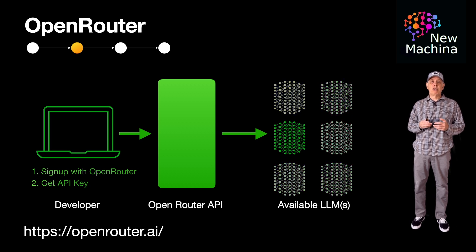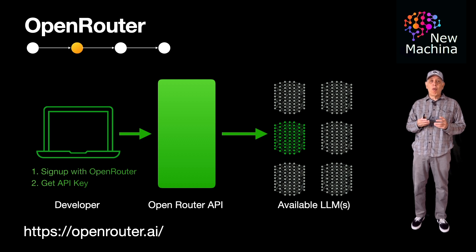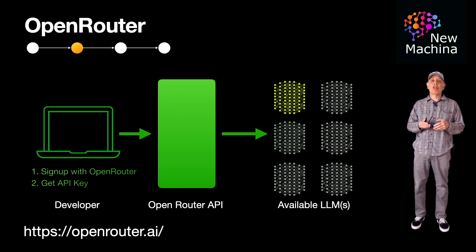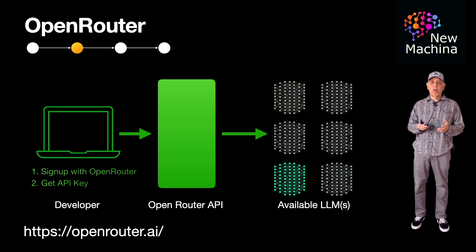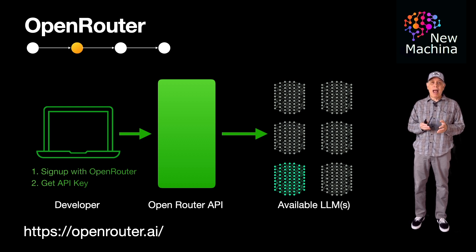Users can choose between multiple models depending on their use cases or pricing preferences, allowing more control over the model's performance and cost. Open Router also includes tools for monitoring usage, billing, and performance, helping developers track and optimize their LLM usage.